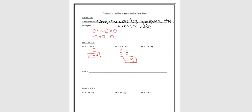And then in my last example, I have 3 negatives here — 1, 2, 3 — and then I have 8 negatives here: 1, 2, 3, 4, 5, 6, 7, 8. How many do I have altogether? I have 11 negatives.